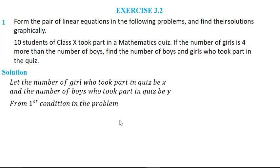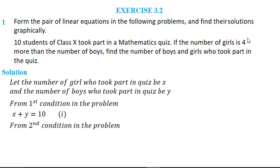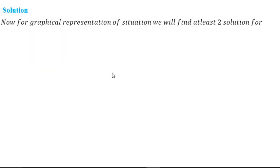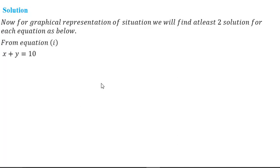From the first condition, we have a total of 10 students, so x + y = 10. From the second condition, the number of girls is 4 more than the number of boys, so x = 4 + y. This gives us a pair of linear equations. For the graphical solution, we find at least two solutions for each equation. I recommend finding three points and plotting them. When I take x = 5 in the first equation, I get 5 + y = 10, giving y = 5.